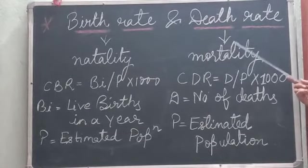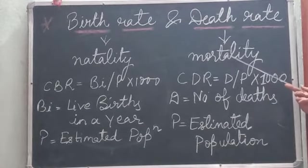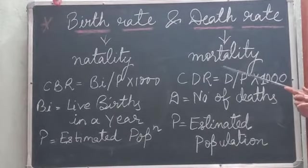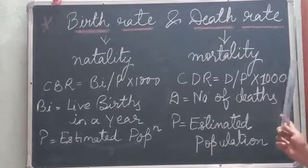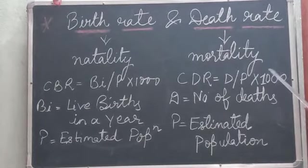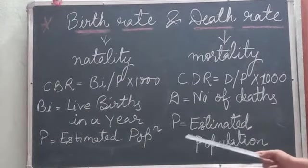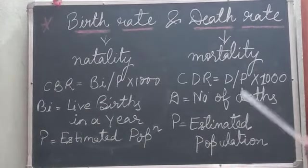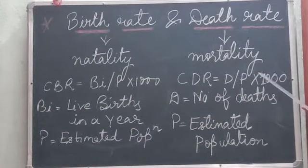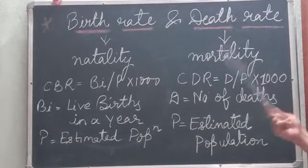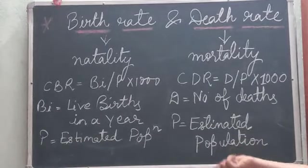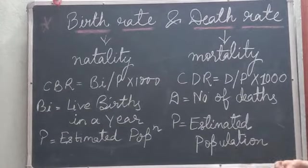The rate of occurrence of death is called the death rate, also known as the mortality rate. The Crude Death Rate (CDR) is expressed as the number of deaths occurring per thousand individuals. CDR = D / P × 1000, where D is the number of deaths and P is the estimated population. The death rate may be influenced by factors like war, disease, technology, medical facilities, and nutrition.